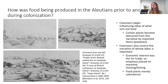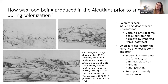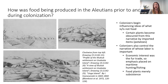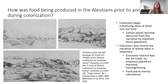How was food being produced in the Aleutians prior to and during colonization? In images of Unalaska and Unga Island, we see very distinct agricultural garden plots, typically used for farming potatoes. Colonizers began influencing ideas of what is and is not food — certain plants became obscured from the narrative by imported items. We constantly see reference to potatoes and potato gardens. Colonizers also controlled the narrative of whose labor is important; economic interest was the fur trade, so emphasis was placed on maritime hunting and fishing. Food plants were seen as merely subsistence, not a major part of the narrative.